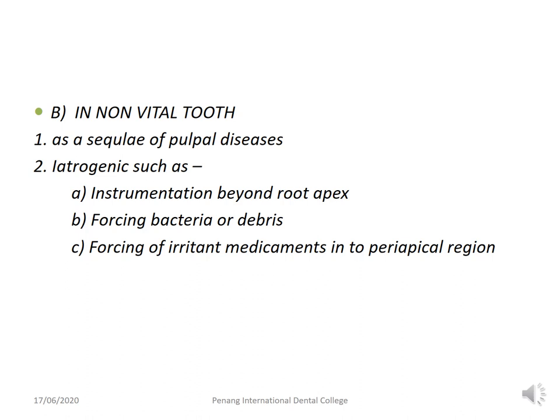Acute periodontal abscess in a non-vital tooth can be a sequela to pulpal diseases, or may be due to iatrogenic causes during root canal treatment such as instrumentation beyond the root apex, forcing bacteria or debris into the periodontal space, or forcing irritant medications into the periapical lesion. Symptoms include severe pain, tenderness over the tooth, and the tooth may be extruded making occlusion painful. Treatment for a vital tooth includes curettage, debridement, and establishing drainage of the infrabony pocket through the sulcular crevice. If the pulp is affected and the tooth is non-vital, treat it as acute irreversible pulpitis.